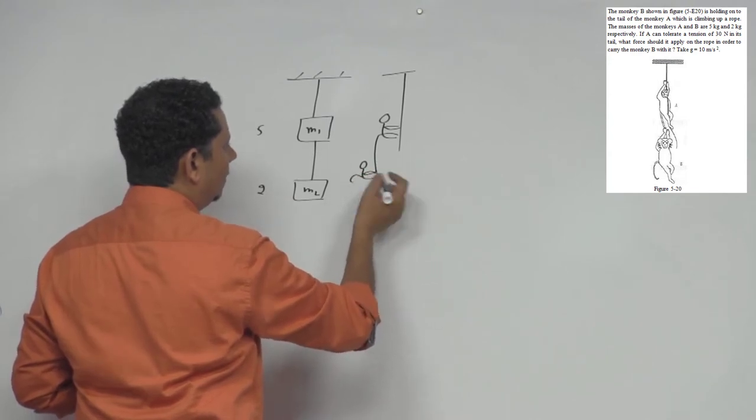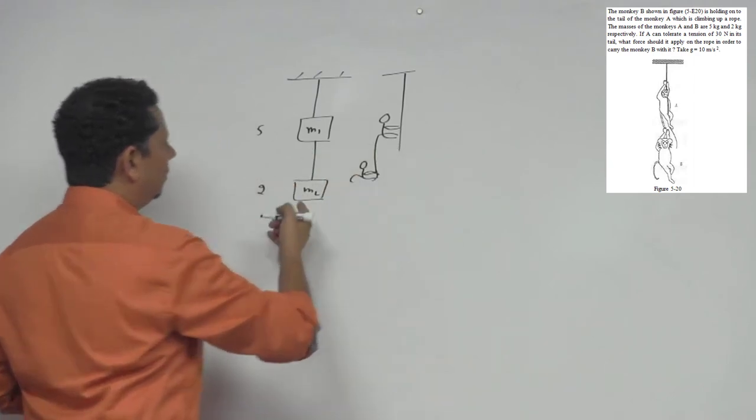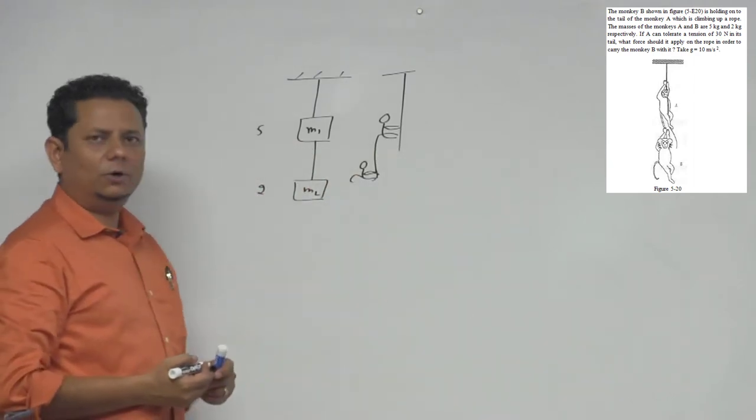Not bad, alright. So this is how second monkey is, usi ko ame m1, m2, dho block aise bana lye hai.